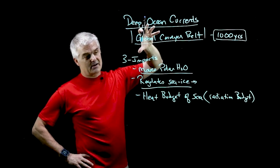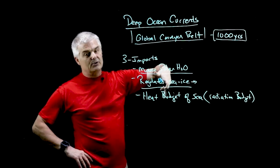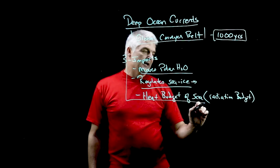And the global conveyor belt can do that because what it does is take some of that hot—it's not that hot but warmish water—and sinks it down and then cools it down. It's moving it around the earth and it helps to regulate the temperature on the earth.